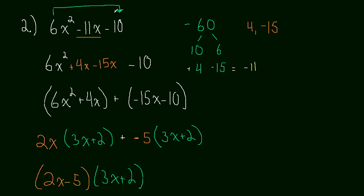Again, we just take the coefficient, multiply it by the last term, find the factors that add up to the middle term, replace, group, and factor. So you don't have to memorize these steps. Just think about what's going on and hopefully it will start to make sense to you why this method works. Okay, I'll see you in the next video.